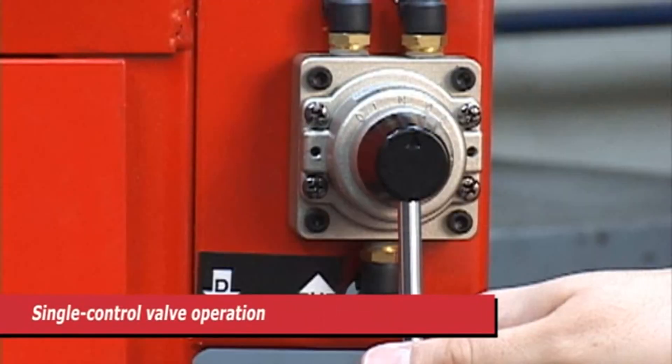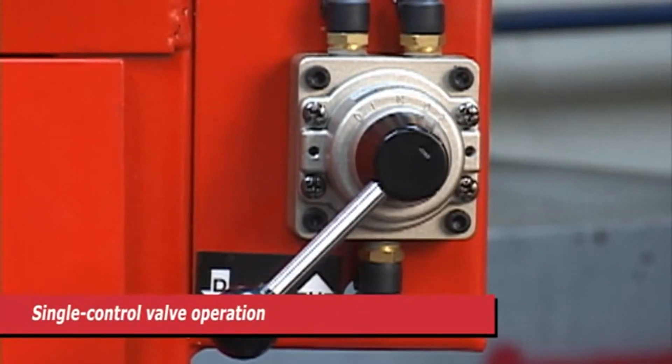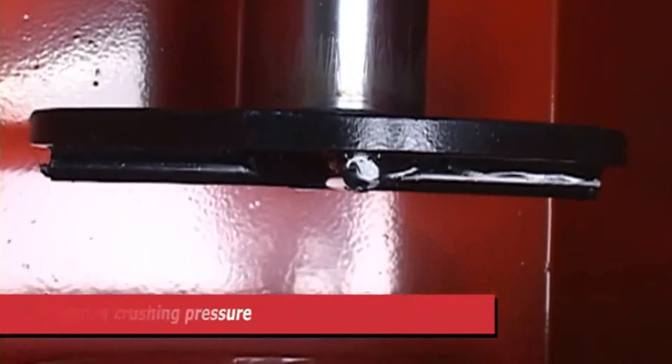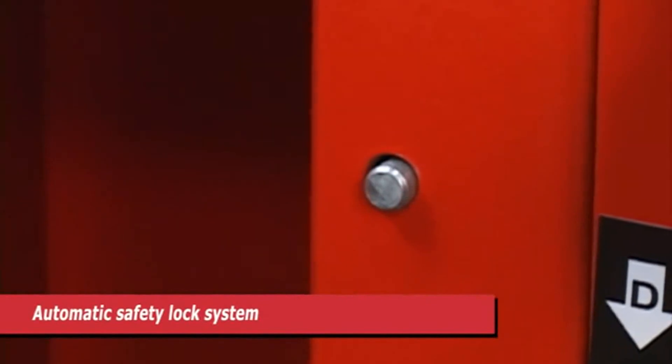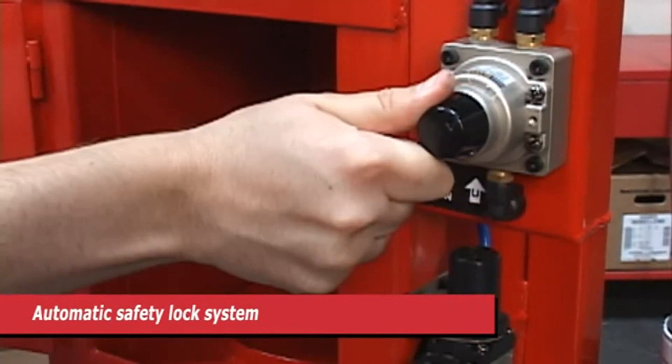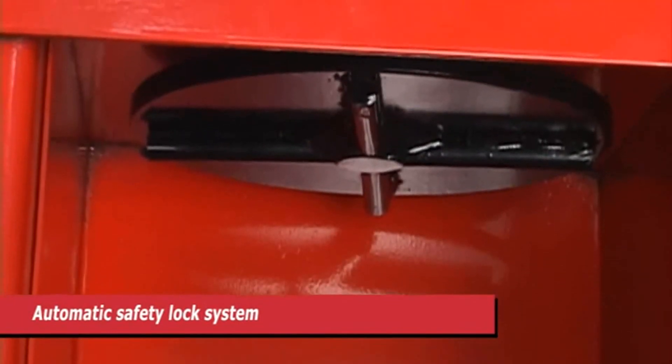All crushing procedures are controlled by a single lever. Just move it to the down position and the tremendously powerful press head lowers with a staggering 20,000 pounds of pressure. The RP20FC also incorporates an automatic safety lock system. The moment the shield door is open, all crushing operations immediately cease until the door is reclosed.